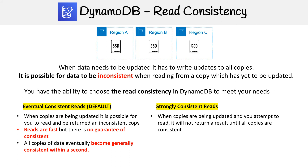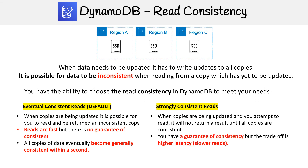If consistency is extremely important to you, this is where strongly consistent reads come into play. When copies are being updated and you attempt to read, it's not going to return data unless all the copies are consistent. The trade-off here is you're going to have a guarantee of consistency — it's always going to be consistent — but you're going to have to wait longer for that read to come back, so it's going to be a slower read. All copies will be consistent within a second.